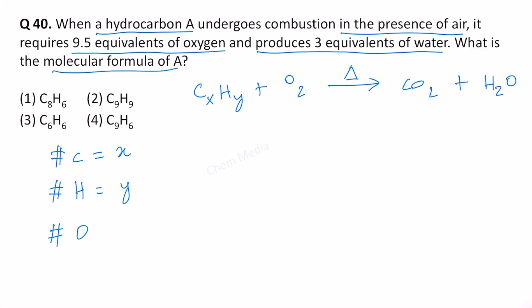In terms of oxygen molecule, it is given as 9.5 equivalents. Once we balance this equation we can find out the correct molecular formula for this. We have X number of carbon atoms. Therefore, to balance the equation we can simply multiply by X in front of CO2 because whatever be the number of carbon atoms, that many CO2 we will get.